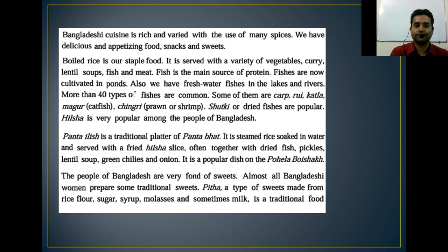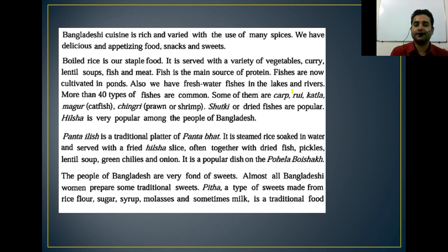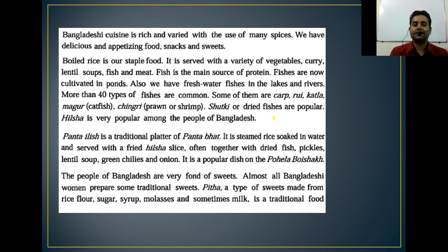Fish are now cultivated in ponds. We also have fresh water fishes in the lakes and rivers. More than 40 types of fishes are common. Some of them are carp, rui, katla, magur — called catfish in English — chingri, which comes in two kinds: prawn or shrimp. Shutki or dried fishes are popular. Students who have already visited Chittagong or Cox's Bazar are very much familiar with Shutki.